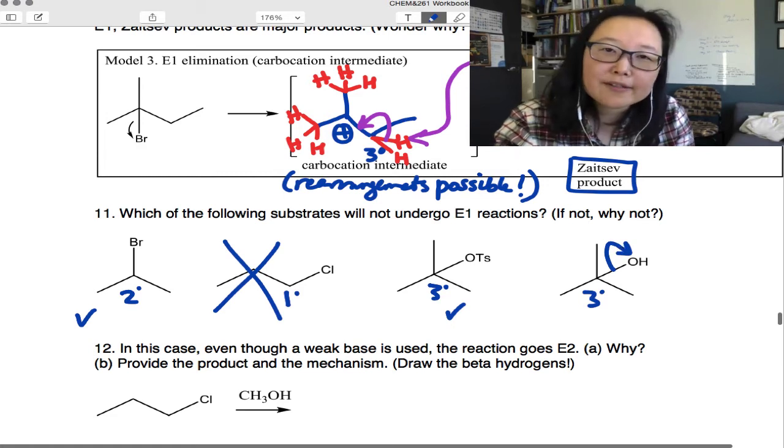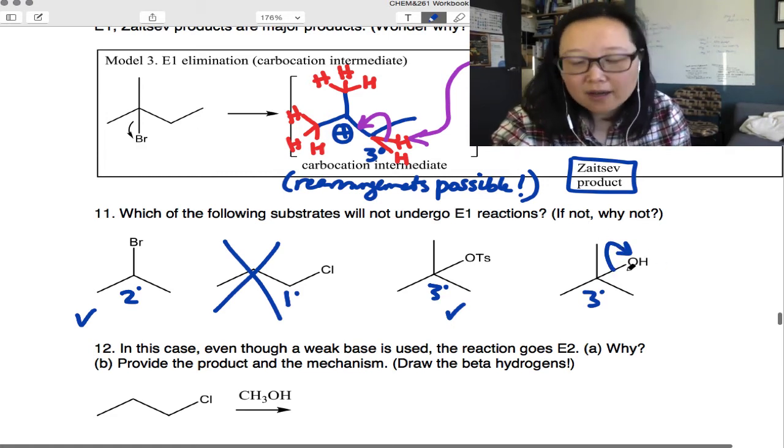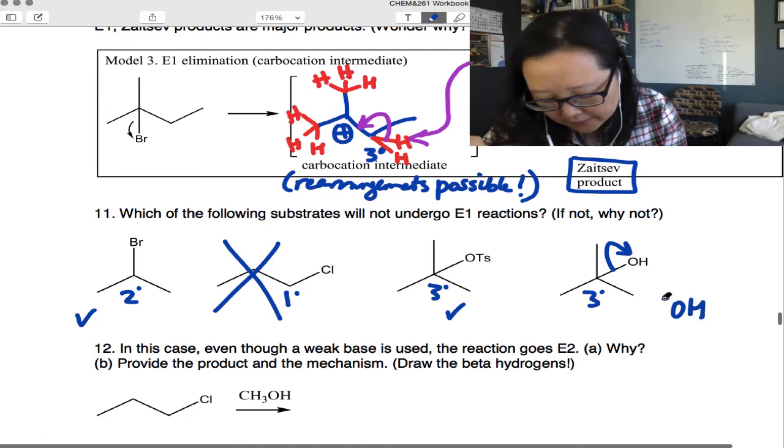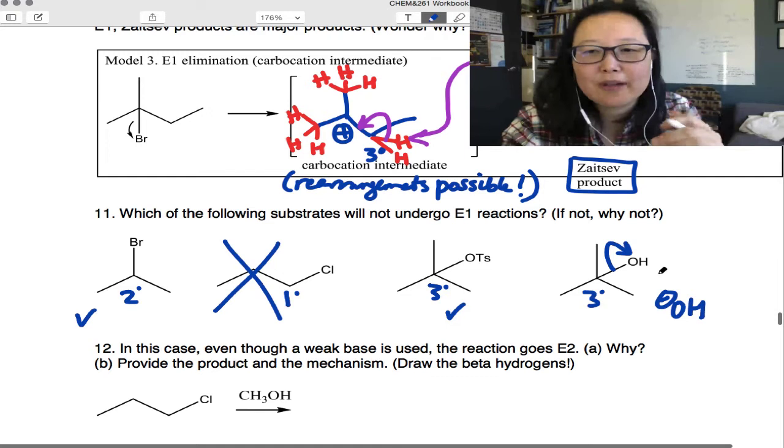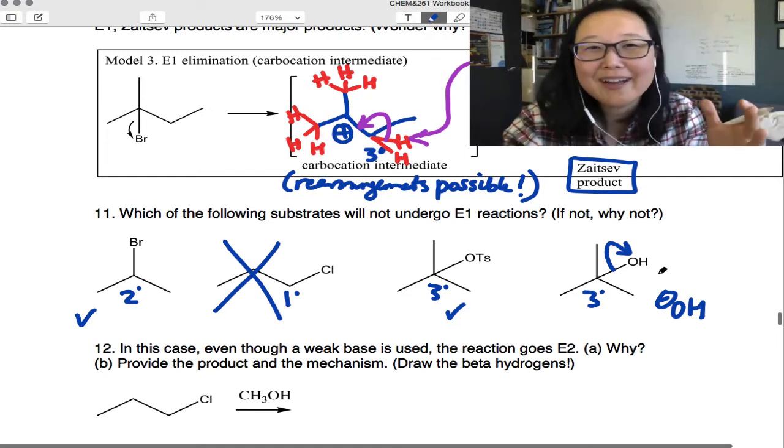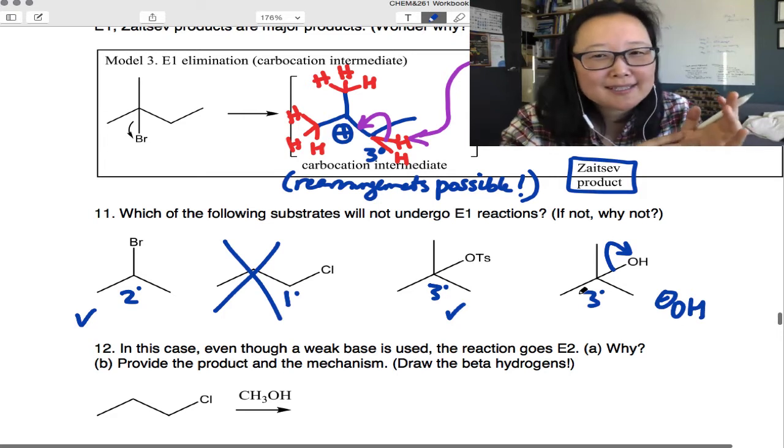Well, in the first step of E1, OH has to come off. And hydroxide is a very poor leaving group. So unless you're already in basic solution where you have hydroxide floating around anyway, this is not going to be super easy to happen.